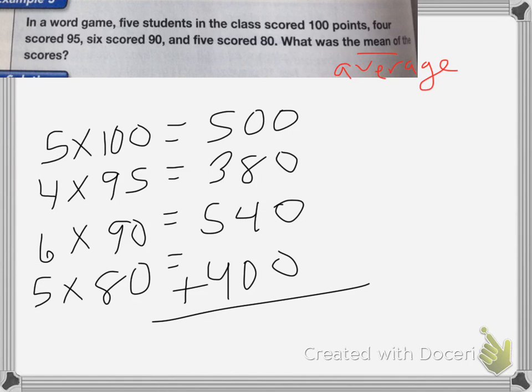I'm going to add all those together. 12, 1820. Now I'm going to divide by how many scores I had total, which is going to be these numbers added up. Five plus five is 10, plus six is 16, plus four is 20. So I have 20 scores total.